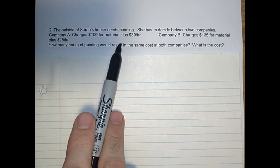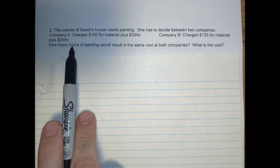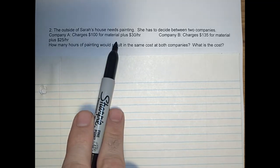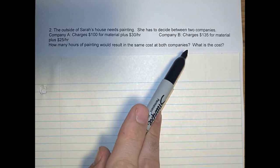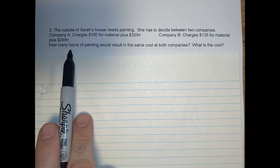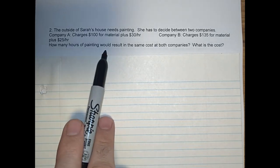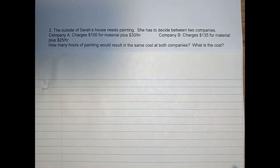The outside of Sarah's house needs painting. She has to decide between two companies. Company A charges $100 for material plus $30 per hour. Company B charges $135 for material and $25 per hour. How many hours of painting will result in the same cost at both companies? What is the cost?